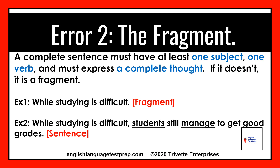Be sure to proofread your sentences for this error. Example two: while studying is difficult, students still manage to get good grades. This is now a full sentence — a complex sentence that expresses a complete thought. While studying is difficult is the dependent clause, and students still manage to get good grades is the independent clause, i.e., a sentence with a subject and verb that expresses a complete thought.